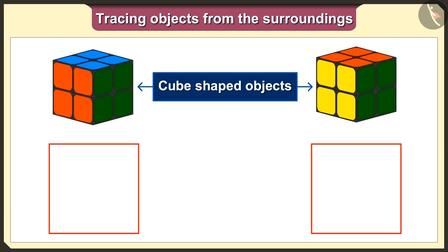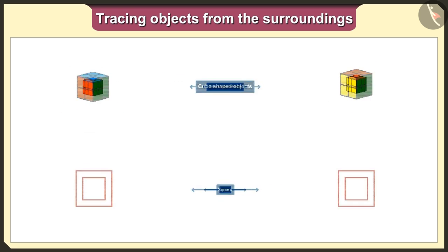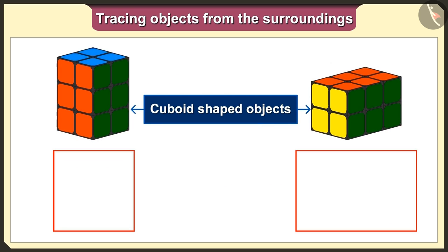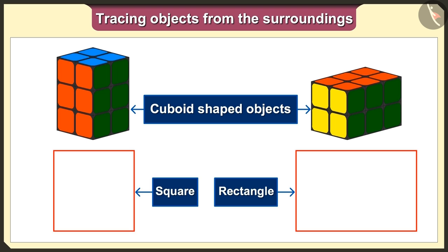So Tolman, remember: if we keep the cube-shaped toy in any way and trace it, we will always get a square shape. And if we trace the cuboid shape, we will always get either a square or a rectangle shape.